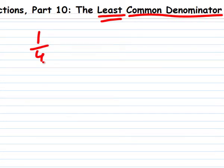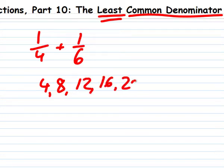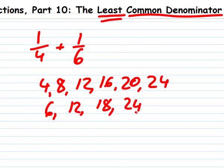Let's say we want to add one-fourth plus one-sixth. What's the least common denominator? Here's the easiest way to find it. Just write down the multiples of each denominator. So, four times one is four, four times two is eight, four times three is twelve, then sixteen, twenty, twenty-four, and so on. And six times one is six, six times two is twelve, then eighteen, twenty-four, and so on.